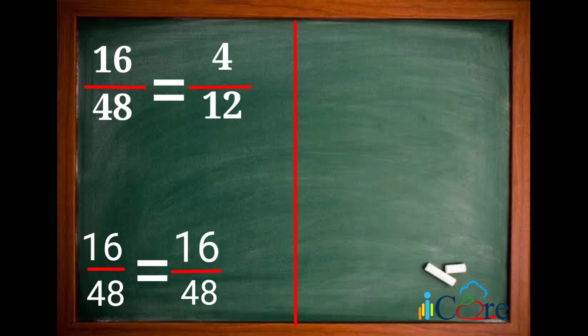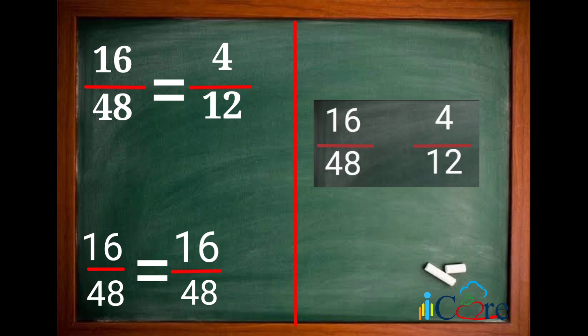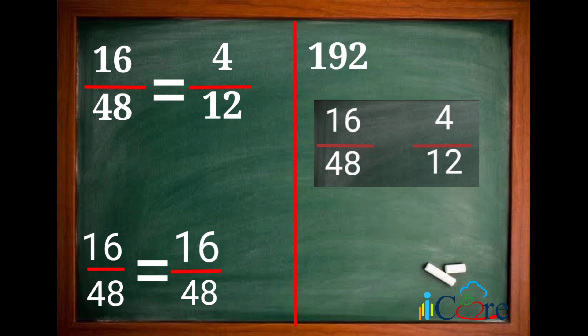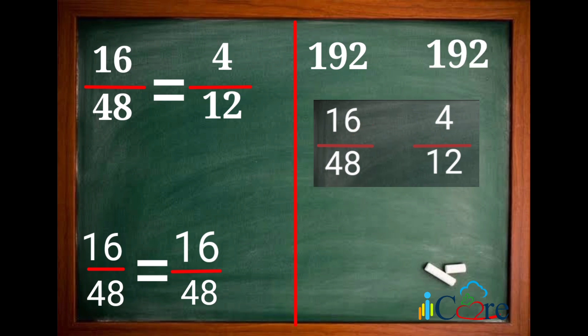Let us now compare the two fractions 16 over 48 and 4 over 12 using the short method, cross multiplication. The numerator of the first fraction, which is 16, times the denominator of the second fraction, which is 12, is equal to 192. Then, the numerator of the second fraction, which is 4, times the denominator, which is 48, is equal to 192. Since 192 is equal to 192, thus 16 over 48 and 4 over 12 are equal.